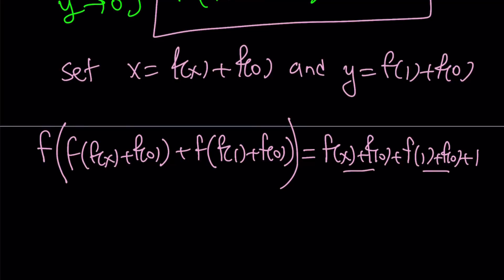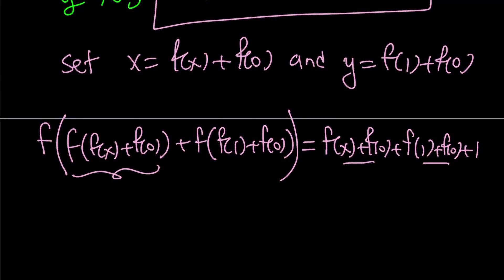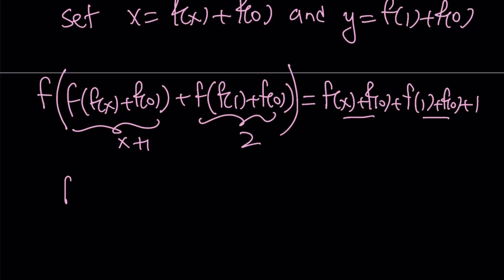Notice that we have a value for both of these. f(f(x) + f(0)) = x + 1. So we can replace this with x + 1 and we can replace this with 2. That gives us f(x + 3) on the left. And on the right hand side, we get f(x) + 2f(0) + f(1) + 1. f(0) and f(1) are both constants. Therefore, this whole thing can be called a constant.